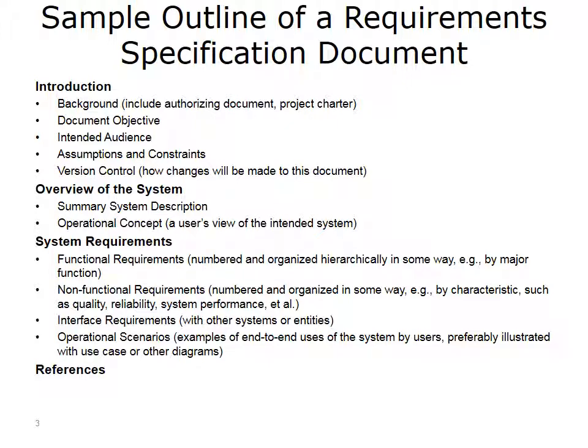When defining scope and requirements at the start of a project, you want to make sure you have a requirements specification document that makes sense for your particular project. Here is a sample outline of a requirements specification document showing the major elements that are very likely to appear. Make sure that your document makes sense for your project and your organization. First, there's an introduction section to capture very important elements and linkages to earlier documents such as the project charter. The introduction also includes the document objective, the intended audience for the document, and other information about how the document will be used.